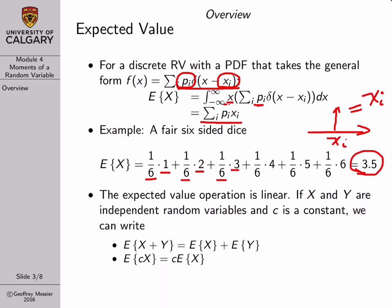A few more properties of the expected value operation: it's linear. If x and y are two independent random variables, the average of their sum equals the average of x plus the average of y. If we scale the random numbers of x by a constant c, it's the same as calculating the expected value of x and then multiplying by c.